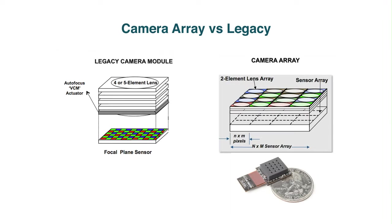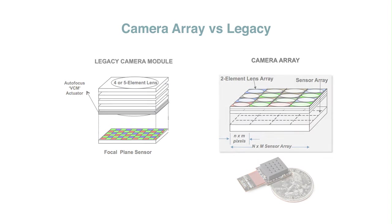In our array architecture, which is shown on the right, we divide the single lens into multiple lens apertures. Each lens corresponds to a sub-sensor on an underlying sensor array. Each sub-sensor is designed to be independently controlled to maximize flexibility, and the individual sensors are optically isolated from one another. Additionally, the color filters are a single color for each camera, which eliminates color crosstalk.